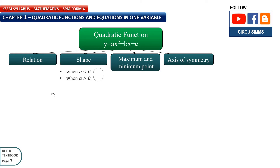When a is less than 0, that means a is a negative number — for example, minus 1, minus 2, minus 3, minus 4, or any negative number. And the shape of the graph will be like this.